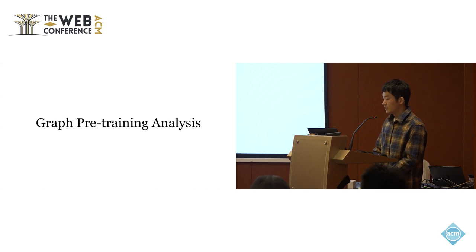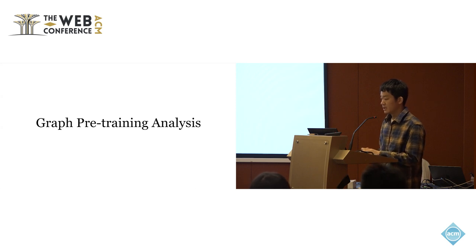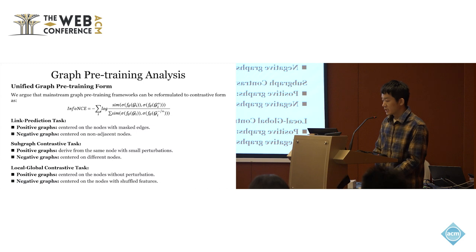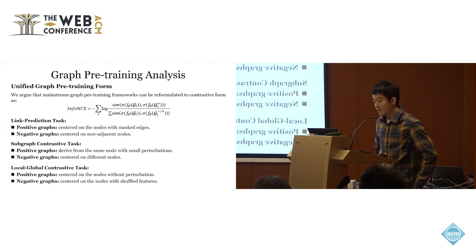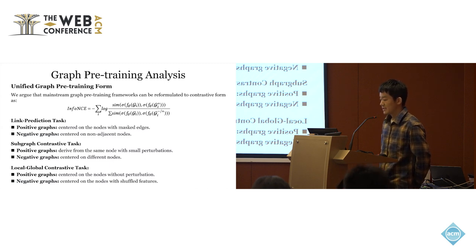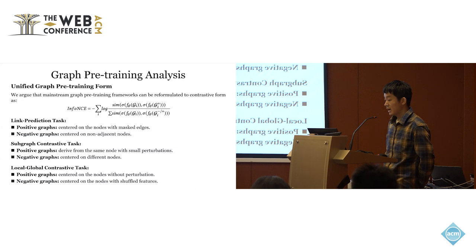So, in order to design the prompt corresponding to the graph, we first analyze the pre-training process and we propose our solutions. For convenience, we first prove that the mainstream graph pre-training can be unified into the contrastive form, whose purpose is to discriminate the negative samples from the positive ones. This process can be shown in the InfoNCE loss. The different graph pre-training methods actually have different positive and negative samples.